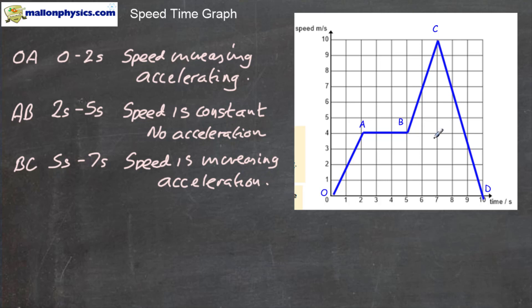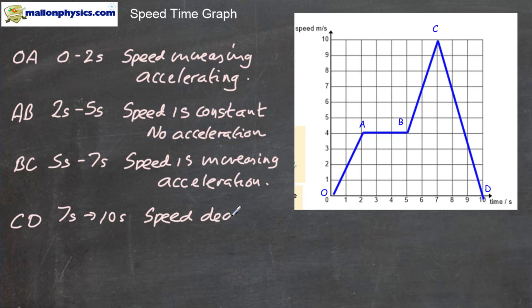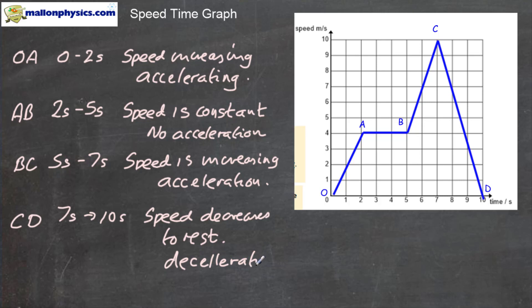The final part of the graph goes from C all the way down to D, covering a time interval of seven seconds to ten seconds — three seconds in total. We can see that the speed is actually decreasing, all the way down to rest, where the object is not moving. In this case the object is decelerating, from a speed of ten meters per second all the way down to zero meters per second. So by looking at these graphs we get a quantitative idea of what's happening — and that's really the story of that particular journey.